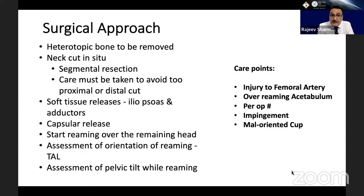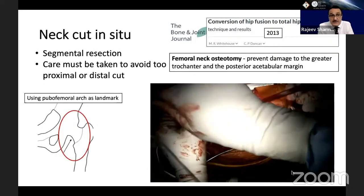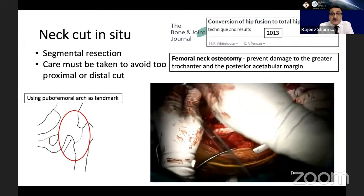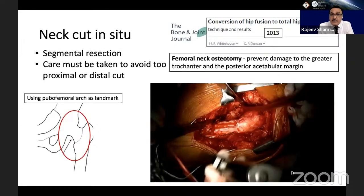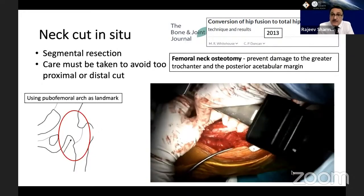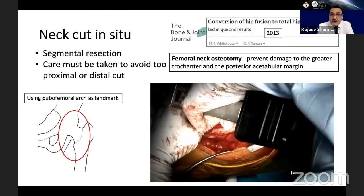Start reaming the remaining femoral head. Assessment of orientation of the reaming depends on the transverse acetabular ligament and assessment of pelvic tilt while reaming is important. Care points include injury to the artery, avoiding over-reaming, perioperative fractures, impingement, and malorientation. The neck is cut in situ in fused hips, especially bony ankylosis. Segmental resection is better if sufficient bone of the neck is visible. The use of the saw is useful for initial cutting, then completion of the osteotomy with osteotomes.